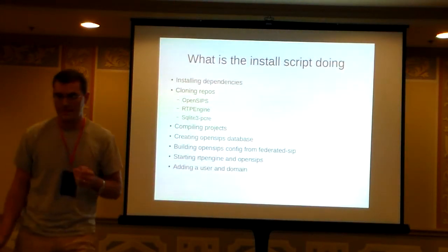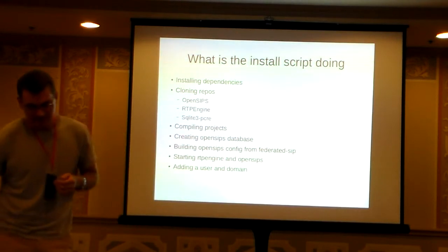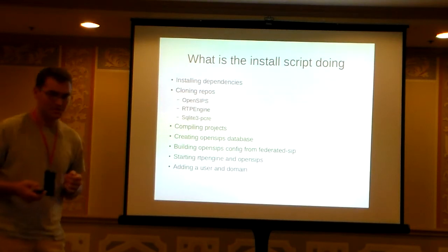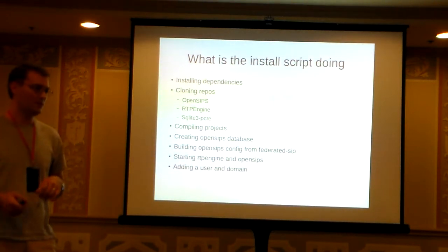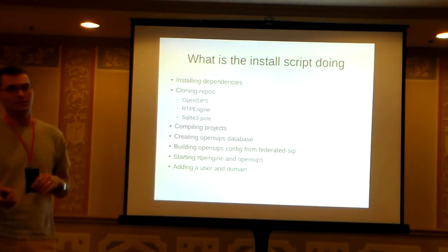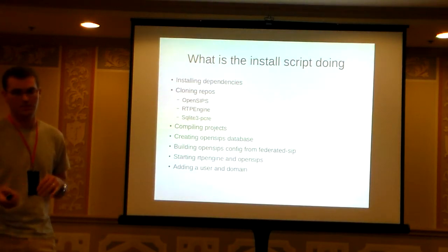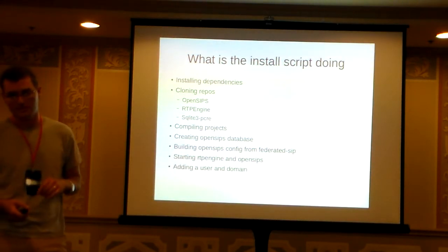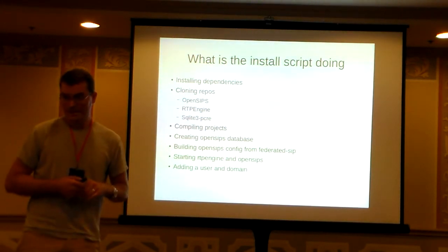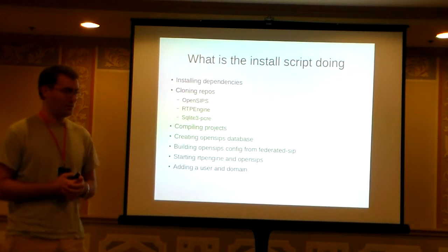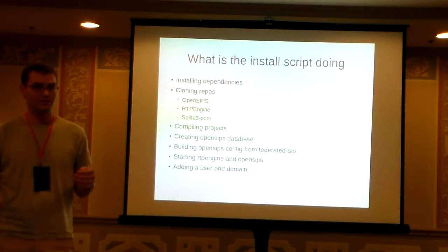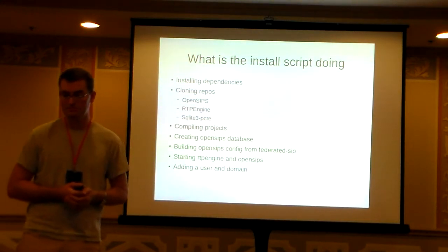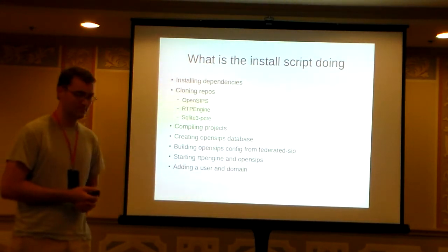Here's a quick overview of what the actual install script is doing. It's installing dependencies needed to build everything, cloning the repos — OpenSIPS, RTP Engine, and SQLite3-PCRE, which is a small extension to the SQLite database that allows regular expression-based matching, a core component of the outbound translations. It compiles everything, creates a small database, inserts the randomly generated domain and user, then starts everything up and you're good to go, hopefully.